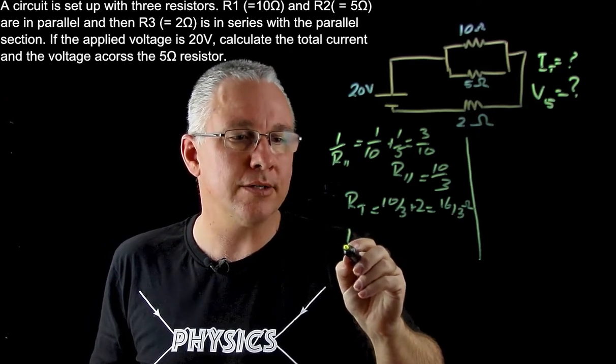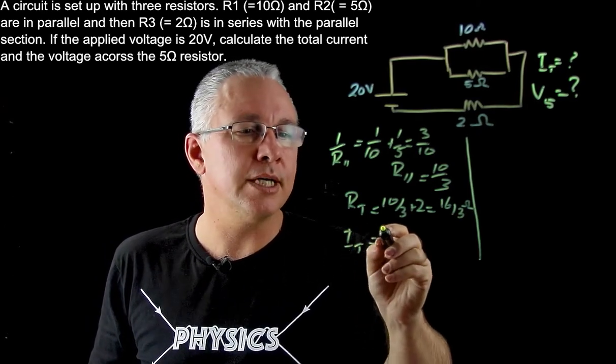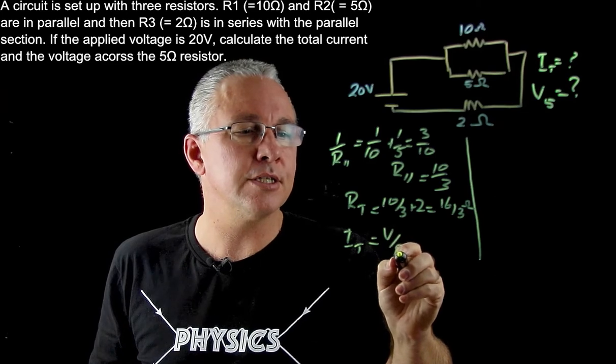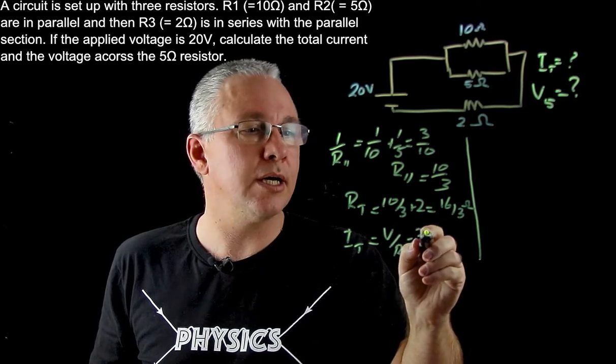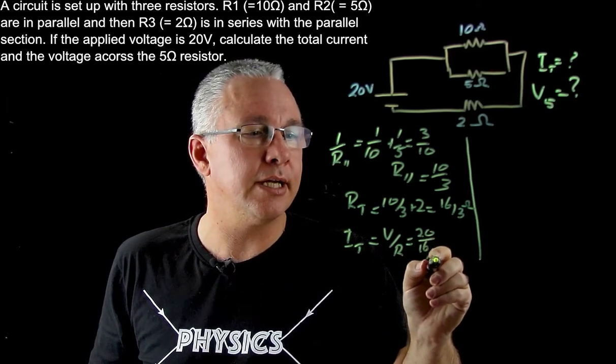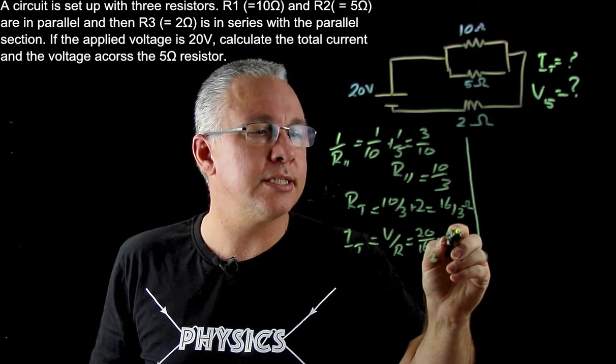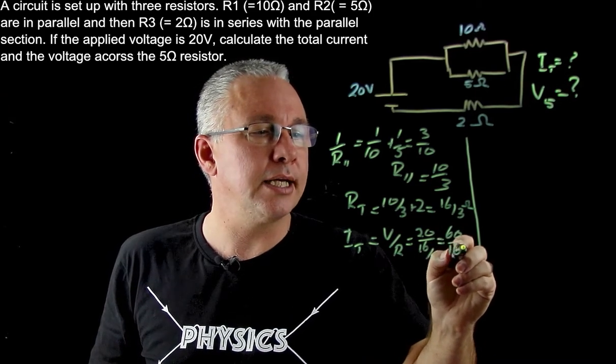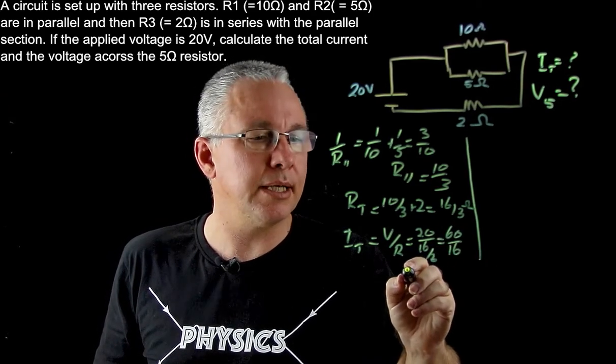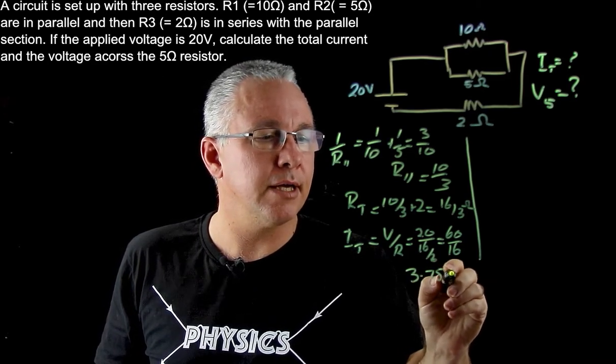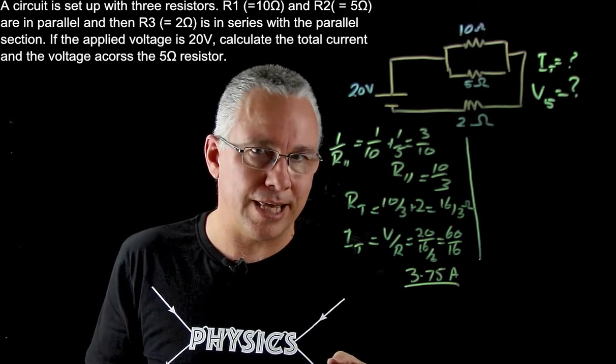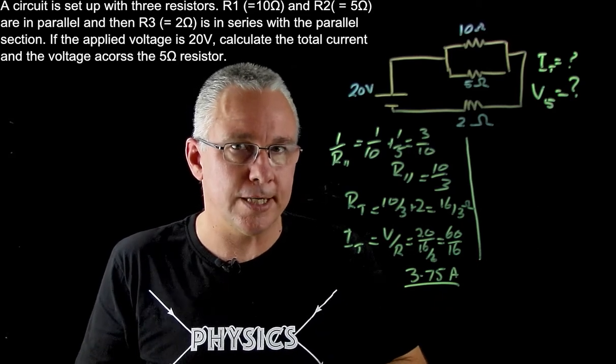Now the total current, using Ohm's law, is voltage over resistance. So I get 20 over 16 over 3, and if you rearrange that you get 60 over 16, which simplifies to 3.75 amps. So that is my total current.